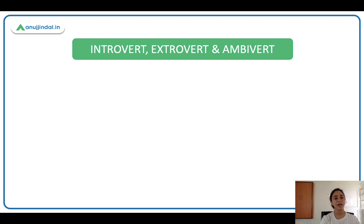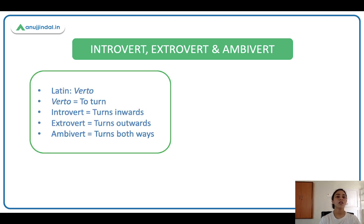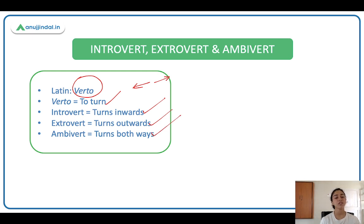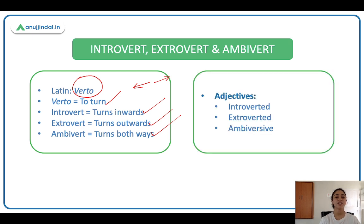Introvert, extrovert, and ambivert all come from the Latin word 'verto,' meaning 'to turn.' So introvert means to turn thoughts inwards; extrovert means to turn thoughts outwards; and ambivert means to turn thoughts both ways — a combination of the two. Their adjectives are introverted, extroverted, and ambiversal. Note: it is ambiversal, not 'ambiverted.' The prefix 'ambi' comes from Latin meaning 'on both sides.'